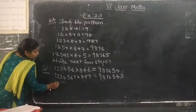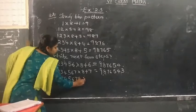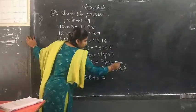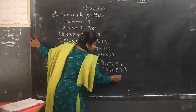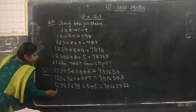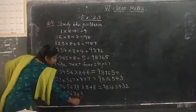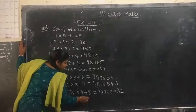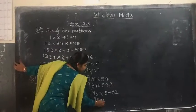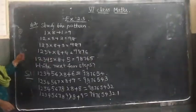So the next two steps continue: 123456789 × 8 + 9 = 987654321. So these are the next four steps to follow for this question.